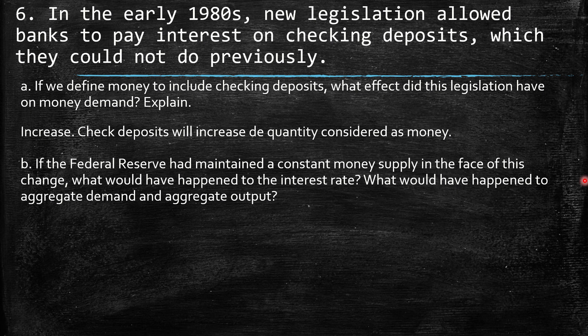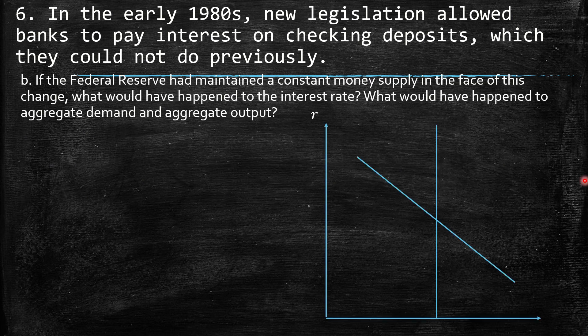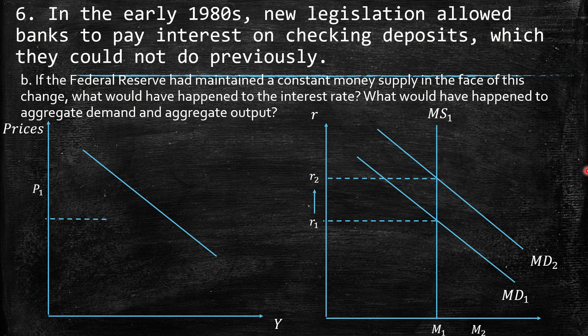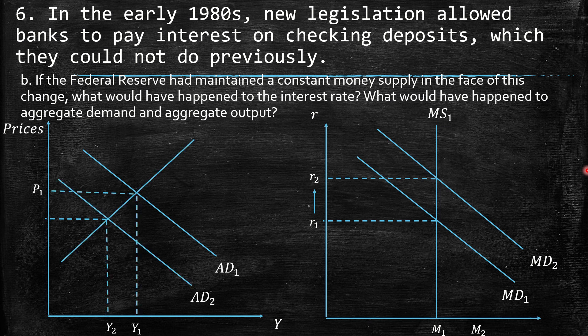b. If the Federal Reserve had maintained a constant money supply in the face of this change, what would have happened to the interest rate? We would have a higher interest rate. Looking at the equilibrium of the nation, there would be an increase in aggregate demand, resulting in higher prices but also a higher level of output.